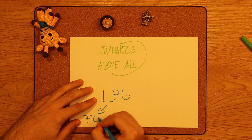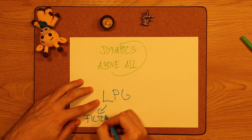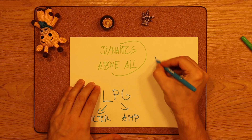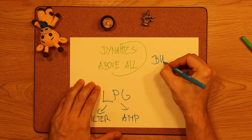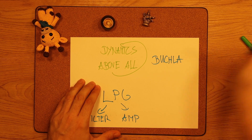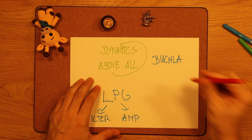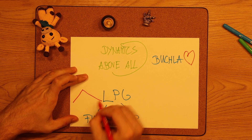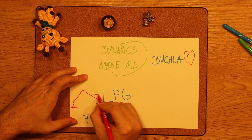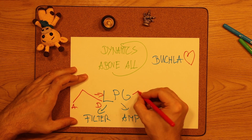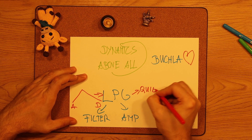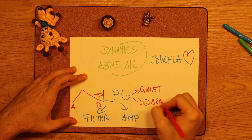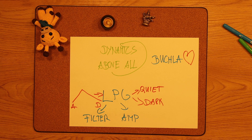The low-pass gate is the invention of Don Buchla, who realized that he could achieve a much better sound by adding a filter to a VCA, so that if the VCA is controlled with an envelope, for example, the sound would not only be quieter during the release portion, but also darker, since the cutoff parameter was also controlled by the envelope.